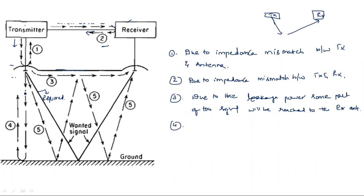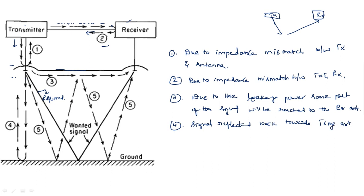Coming to the fourth signal: we expect the signal to directly reach the earth's surface and be reflected back towards the receiver. But when transmitting the signal onto the earth's surface, signals may be scattered in many directions, and some signals may be reflected back towards the transmitting antenna itself. If the signal is reflected towards the transmitting antenna, there is a loss because we only need the reflected signal to enter the receiver.